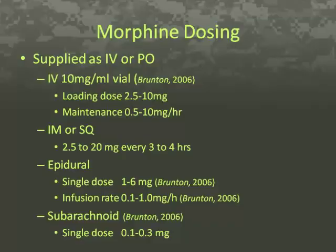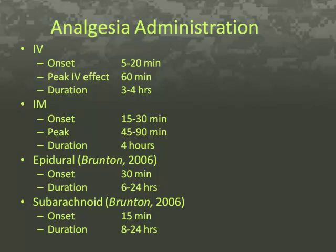Morphine is supplied in IV or PO form, but we will focus on the IV formulation as this is primarily utilized in anesthesia. Morphine comes supplied as a 10 mg per mL vial. The loading dose of morphine IV push is 2.5 to 10 mg with a maintenance drip of 0.5 to 10 mg per hour. Given IM or sub-Q, the dose is 2.5 to 20 mg every 3 to 4 hours. In an epidural, it can be a single dose of 1 to 6 mg or an infusion rate of 0.1 to 1 mg per hour. Subarachnoid is a single dose of 0.1 to 0.3 mg. The onset of IV morphine for analgesia is 5 to 20 minutes with a peak of 60 minutes and a duration of 3 to 4 hours.